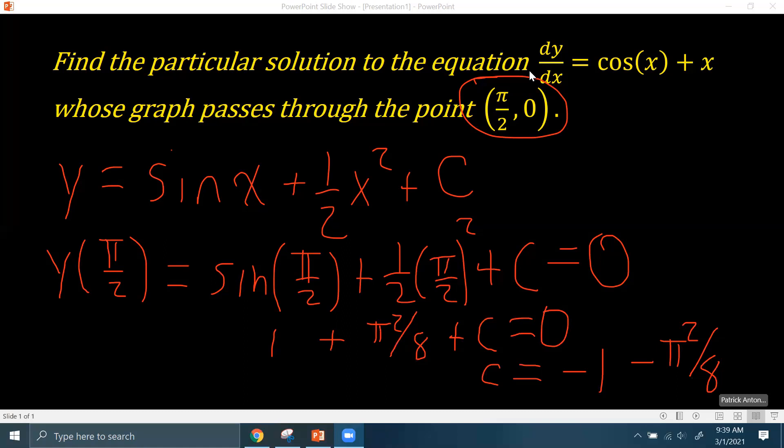Now a lot of students are tempted to stop there because they found a c value. Just keep in mind when it asks for the particular solution, you need to rewrite the equation with your particular value of c in your answer. So our equation is going to be y equals sine x plus one half x squared minus one minus π²/8.